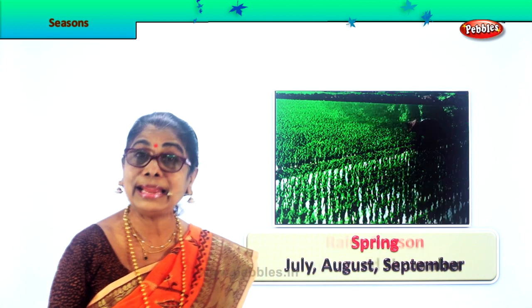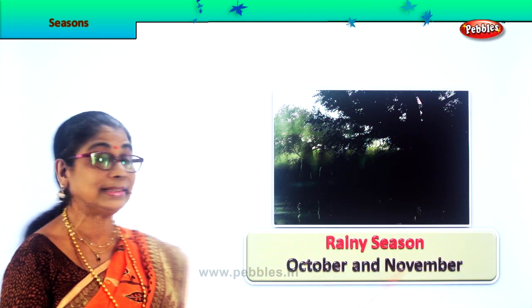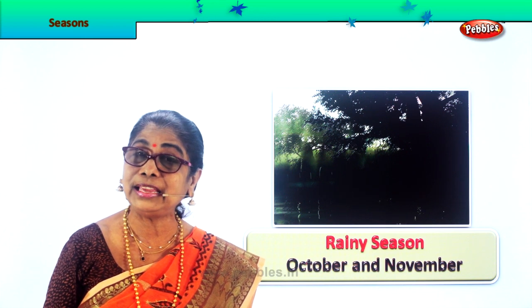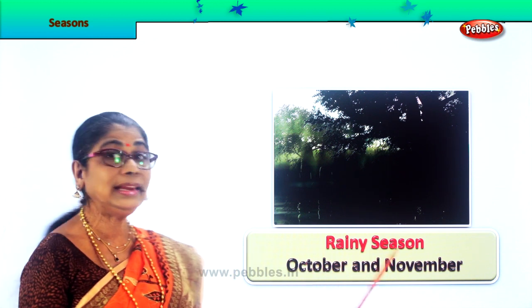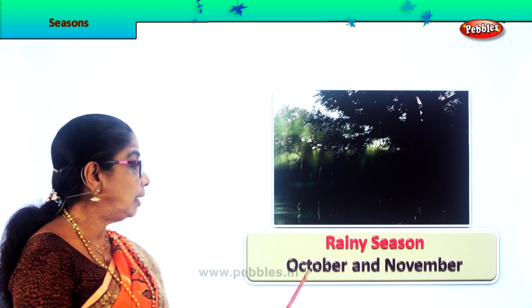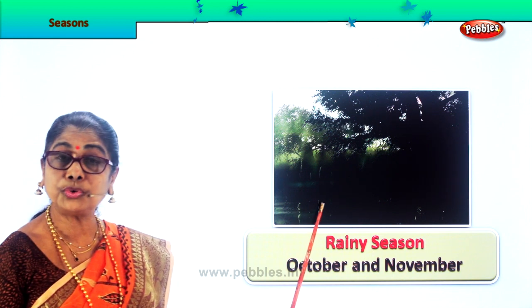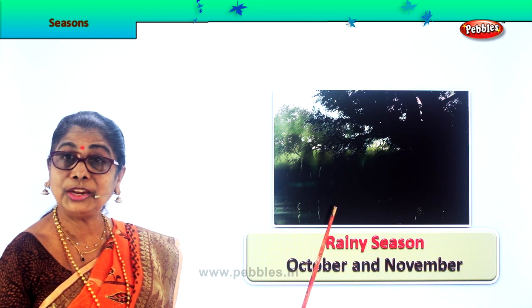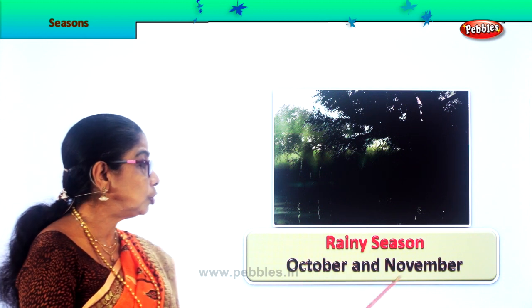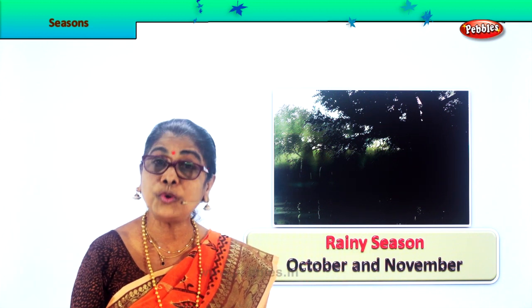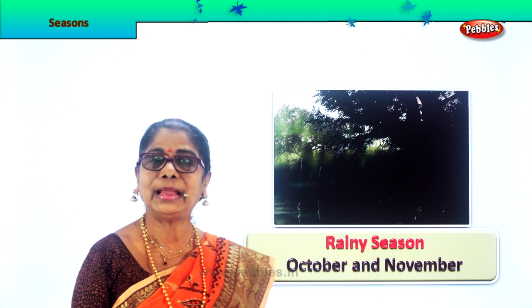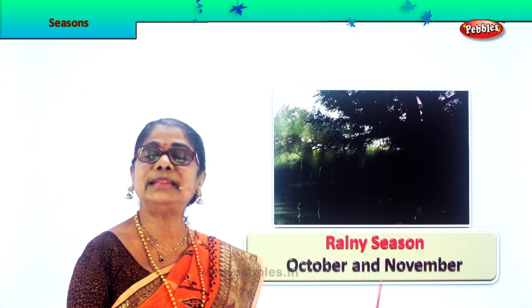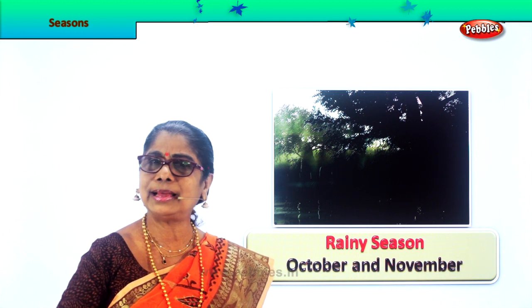Spring for us is followed by the next season — the rainy season. After the farmer has set the fields ready for growing seeds and the sprouts are ready, the rain comes to allow the trees and crops to grow. The fields are ready to accept the rain. In October and November, we get the full rainy season. Everybody enjoys the rain — it's a short season lasting probably just two months.